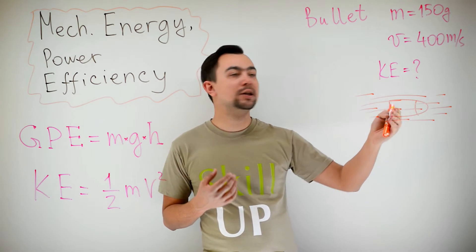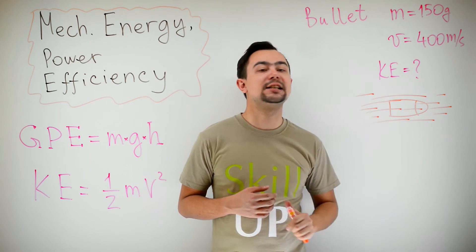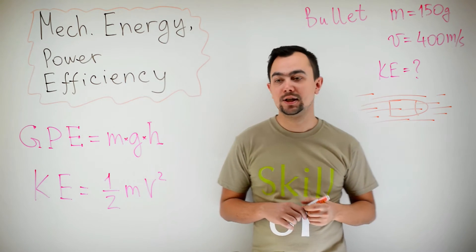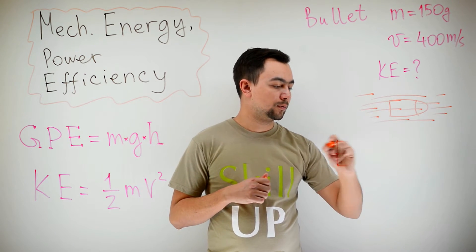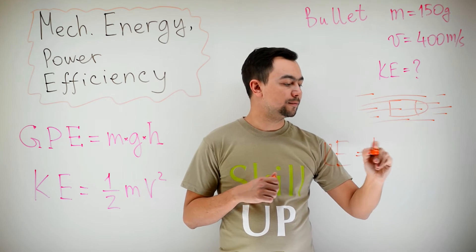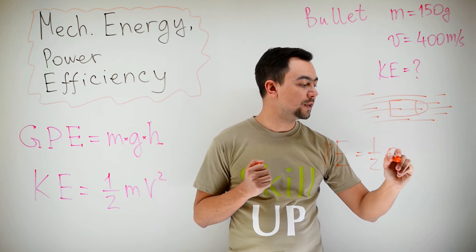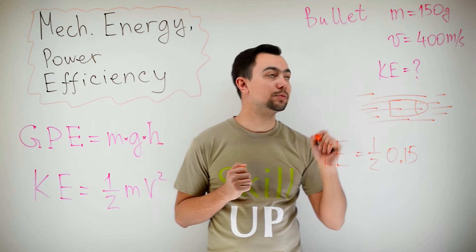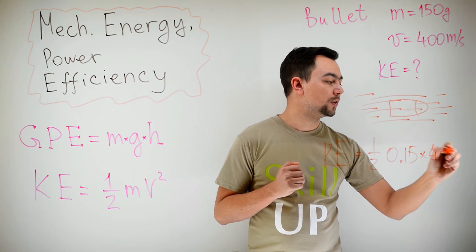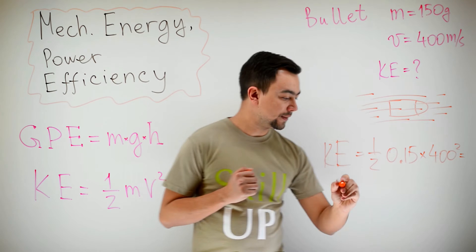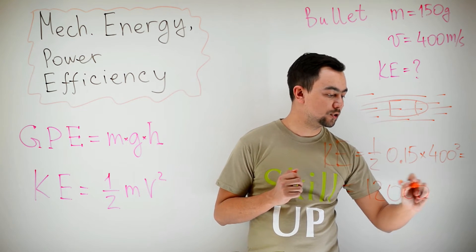Let's calculate the kinetic energy of a bullet, which has a mass of 150 grams and it is traveling at a speed of 400 meters per second. So, applying the formula, kinetic energy is equal to 1 half mass times velocity squared. Mass is 0.15 kilograms. Yes, because we use kilograms, not grams, multiplied by 400 squared, and that gives us approximately 12,000 joules.